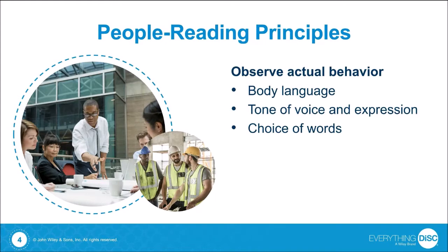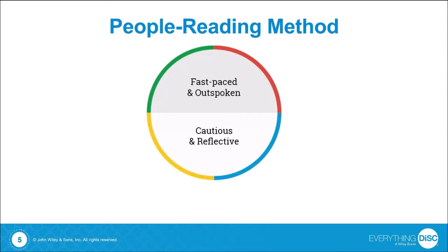Let's walk into this three-step exercise. Start by picturing someone that you know well. For step one, consider whether this person is more fast-paced and outspoken or more cautious and reflective. Think about someone that you know well, perhaps someone you work with, and just make a note of that.